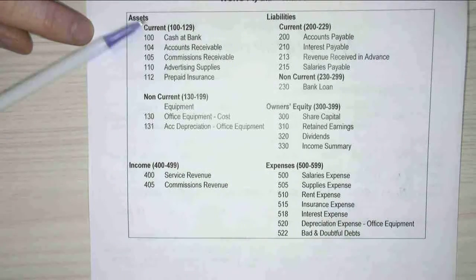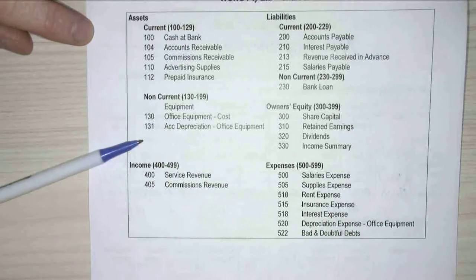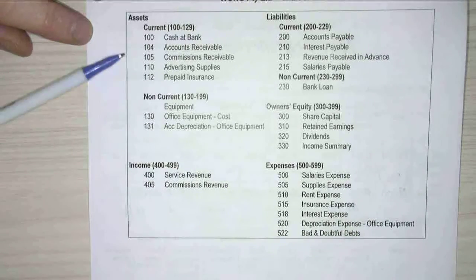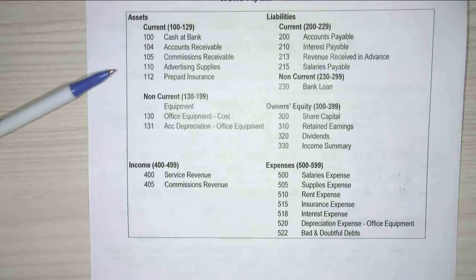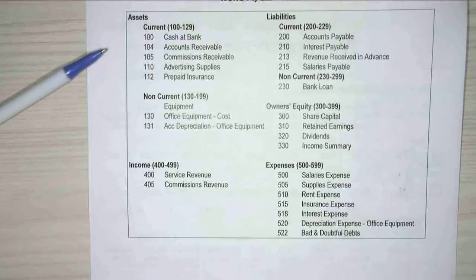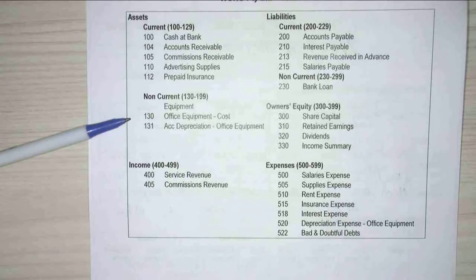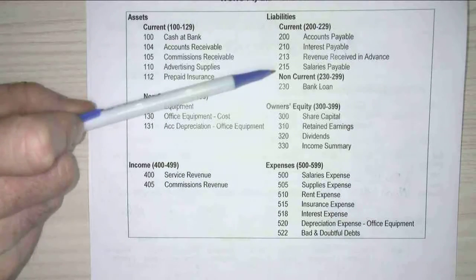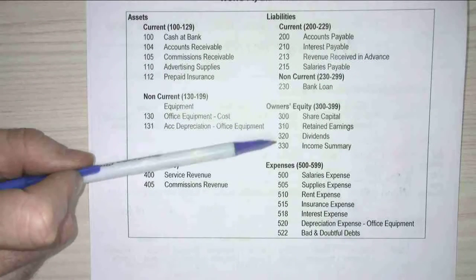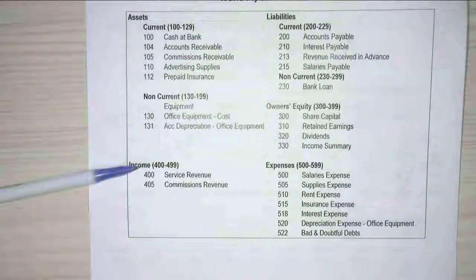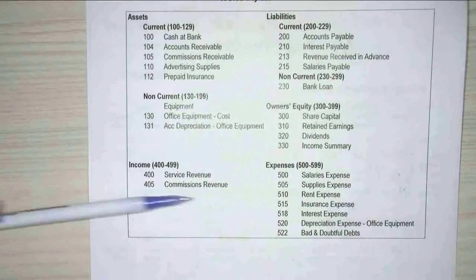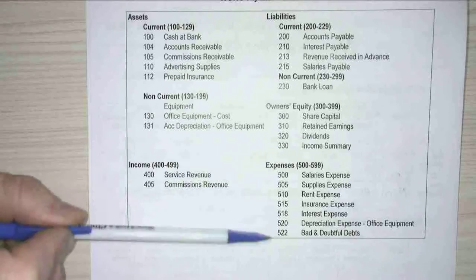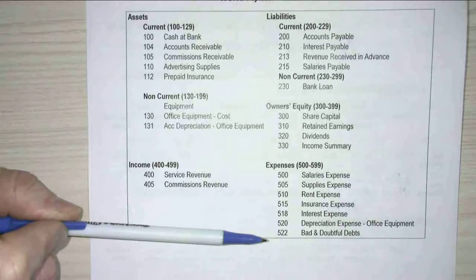Now you can see there's a numbering system here. In my experience, the numbering systems all work the same. Assets are in the 100s. Liabilities are in the 200s. Equity is in the 300s. Income is in the 400s. And expenses is in the 500s.